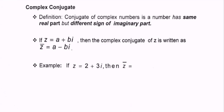Next, we have the complex conjugate. The complex conjugate of a complex number is the number that has the same real part but a different sign on the imaginary part. For example, if z equals a plus bi, then the complex conjugate of z, written as z-bar, equals a minus bi. For example, if z equals 2 plus 3i, then z-bar equals 2 minus 3i.